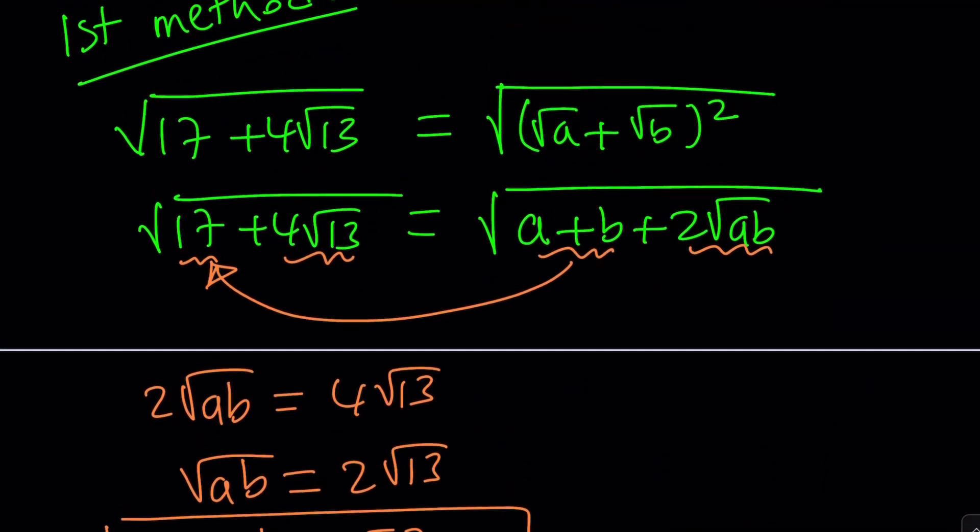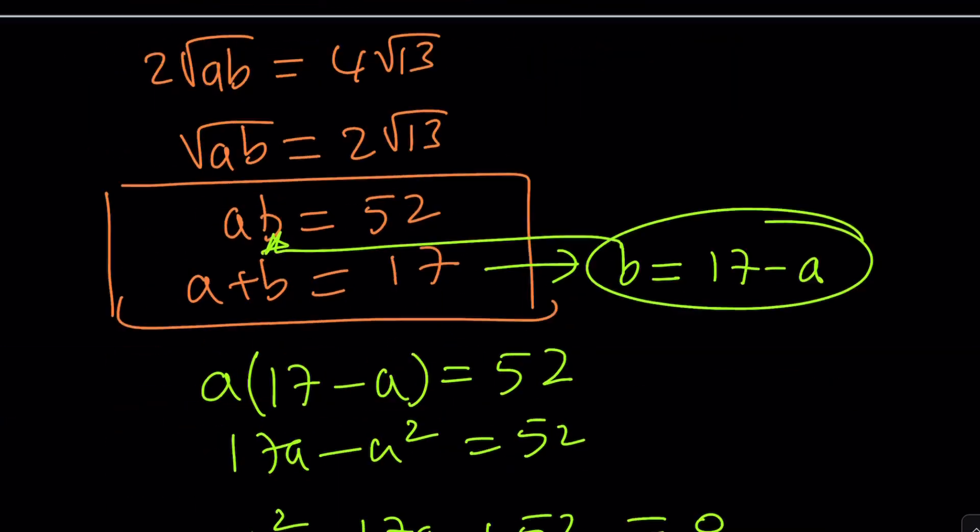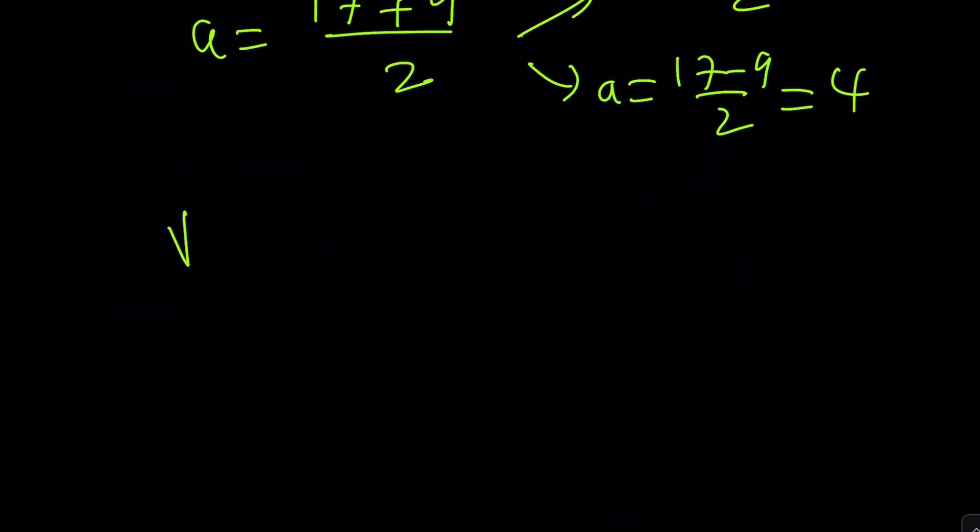So let's go ahead and see how that turns into our problem. So we basically have the following. Square root of 17 plus 4 times the square root of 13 equals square root of a plus square root of b. Now here's what we're going to do. a is 4, b is 13, or vice versa. It doesn't matter. We're going to get the following as our answer. Make sense? I hope it does.